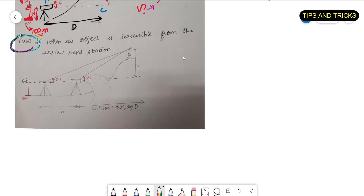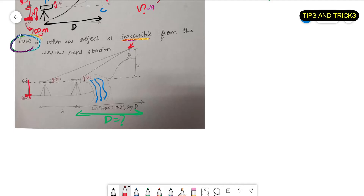In Case 2, the object is inaccessible from the instrument. Say I have a stream here and I can't go and find out this distance d, so d is unknown. Same way, I have a tower here and I need to find the RL. I have a benchmark here. What I'm doing is finding two vertical angles.